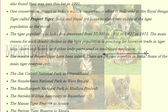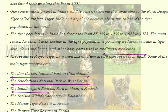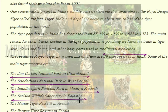The results of Project Tiger have been mixed. There are 29 tiger reserves in India. Some of the major tiger reserves are Jim Corbett National Park in Uttarakhand, Sundarbans National Park in West Bengal, Bandhavgarh National Park in Madhya Pradesh, and Sariska Wildlife Sanctuary in Rajasthan.